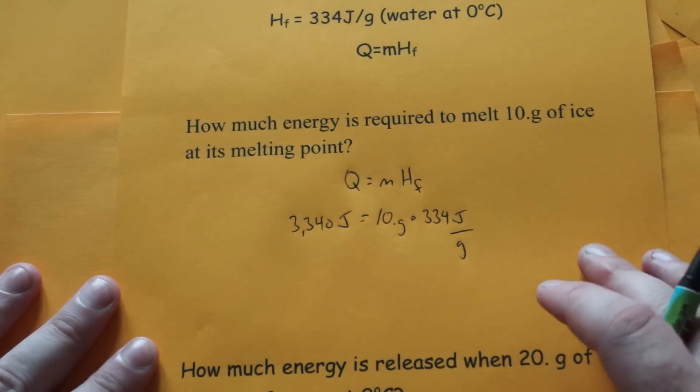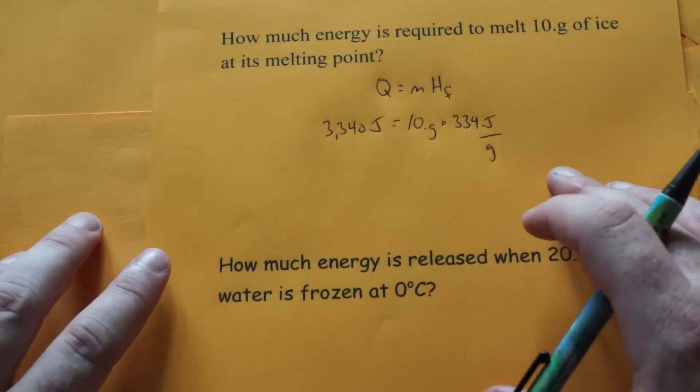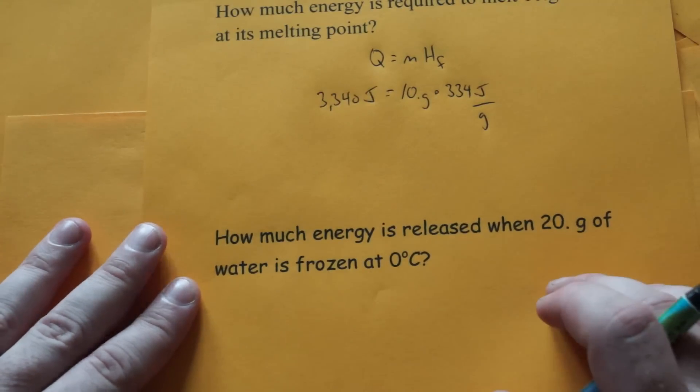At any other temperatures, you have to use both this equation and the Q equals m c delta T equation. This heat of fusion equation is just for the phase change of melting or freezing.